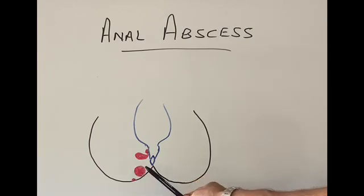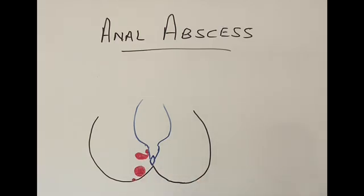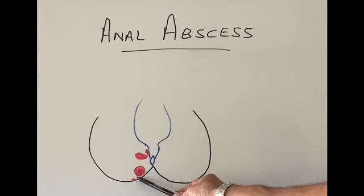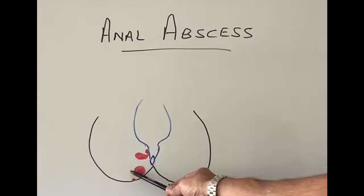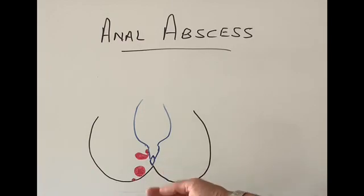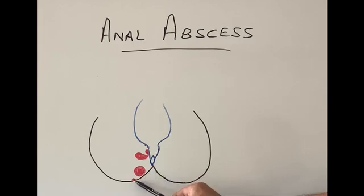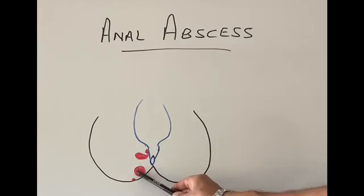Two or three things can happen to it. It can settle down after a day or two if we sit in a bath and keep it clean. If it's not settling down, we might get a course of antibiotics. However, sometimes if we don't do anything about it, it grows and grows and becomes a big pocket of pus - yellow gunky stuff - and it becomes a very tender, hard, and red area on the skin next to the external opening, which is called an anal abscess.